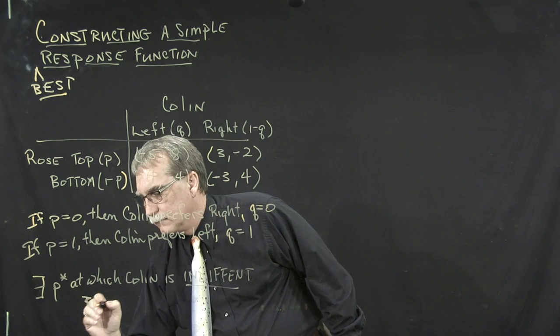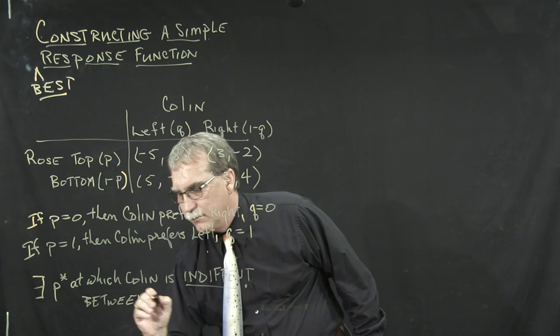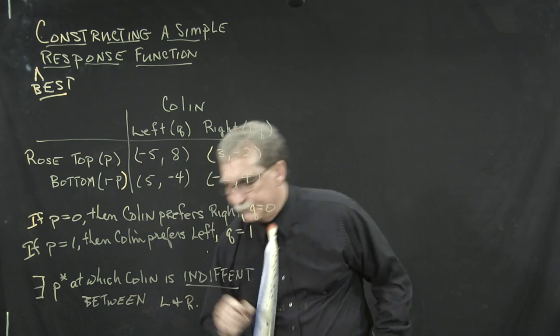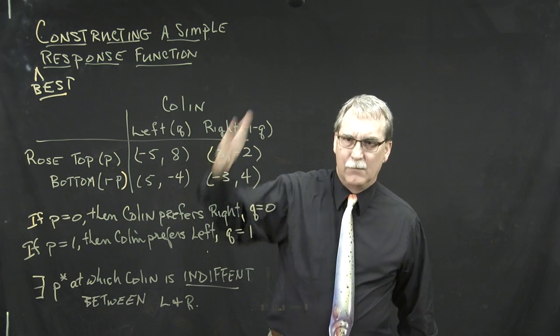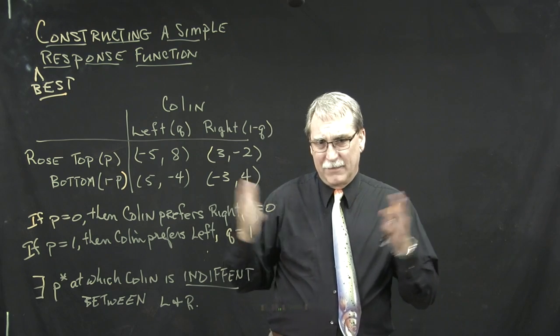If P is different between, and I'm going to abbreviate here because I'm bending over, left and right. That means he doesn't care whether he's in the left-hand column or the right-hand column because he's going to get the same thing.